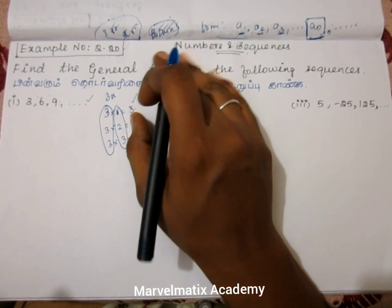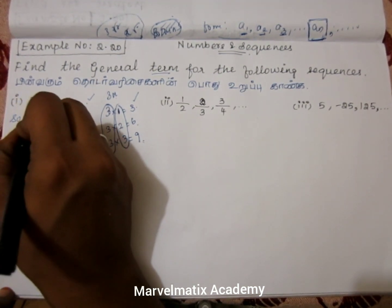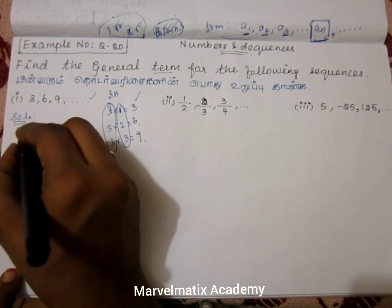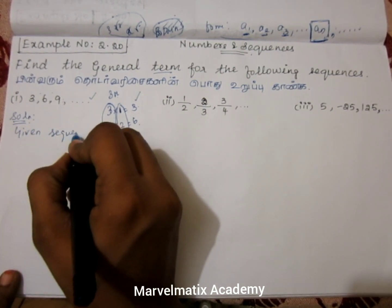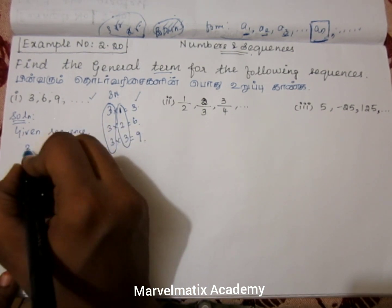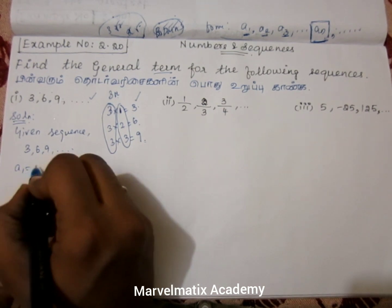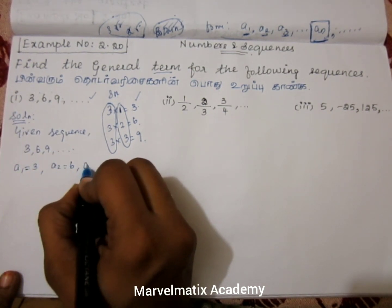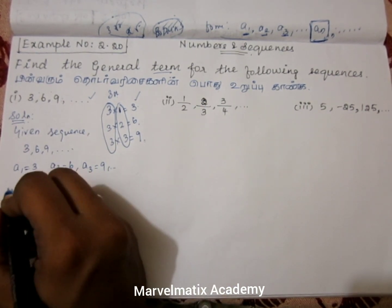We will check that and see the general term. Given the sequence, the second row is the same: 3, 6, 9, etc. That means a1 equals 3 and a2 equals 6. A3 is the third term. We will see the next row.